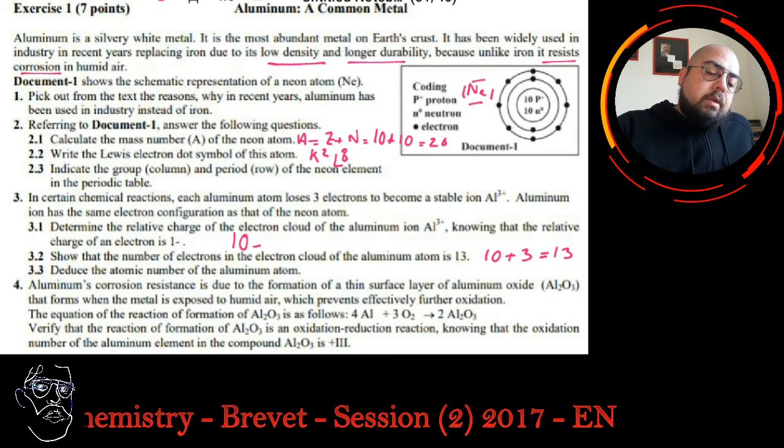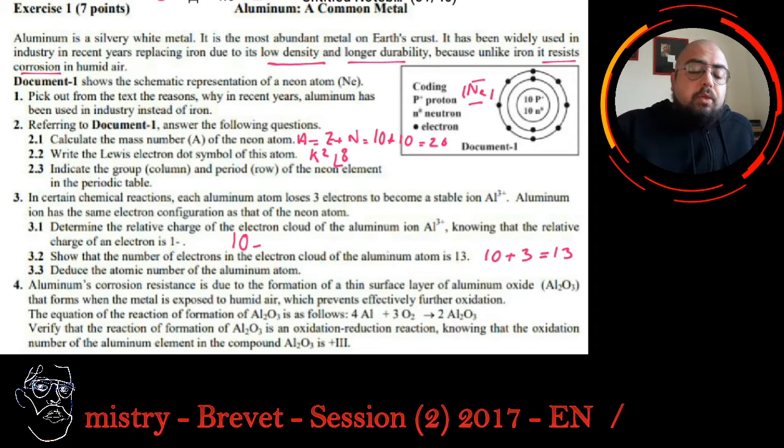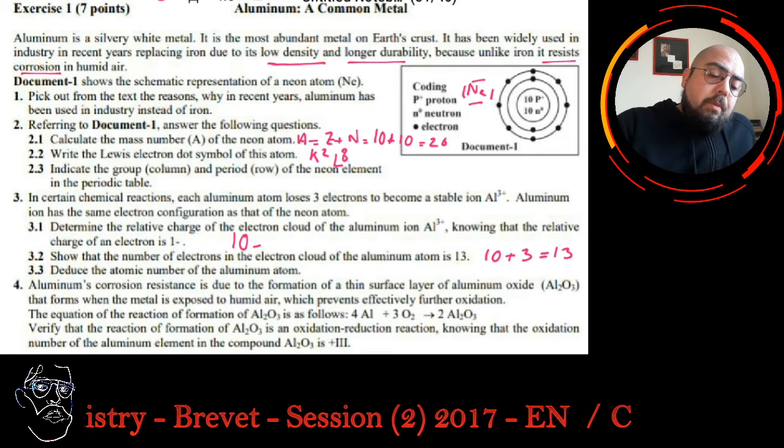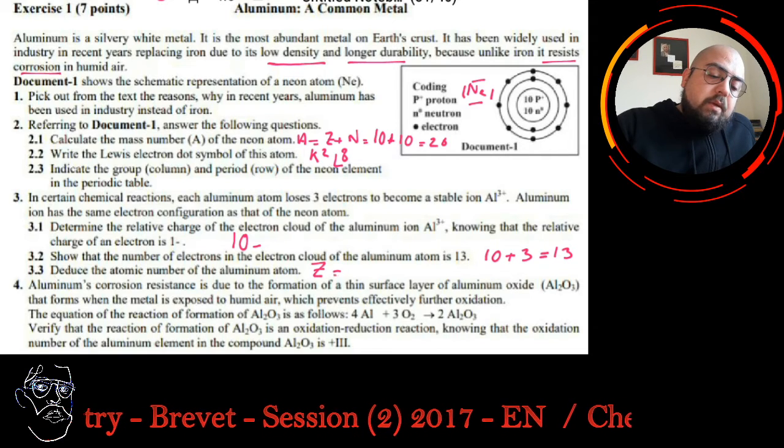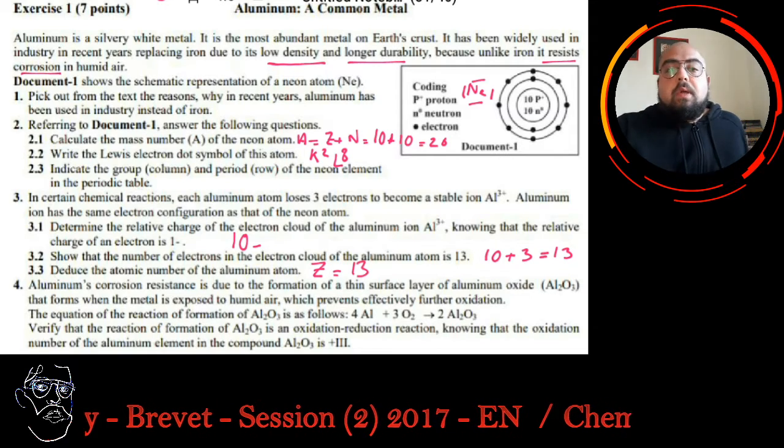Deduce the atomic number of the aluminum atom. You have to say that since the atom is neutral, the atomic number will be Z, which is equal to 13, the number of electrons.